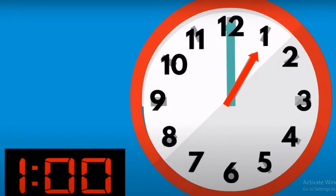This is a clock. A clock is shaped like a circle and you'll find numbers written on it, starting at number 1 and finishing at number 12. You will also find two pointers, two arrows: a long one, which is the blue one, and a short one, which is the red one. Now we're going to learn how to tell the time.